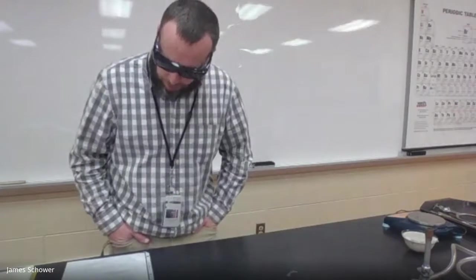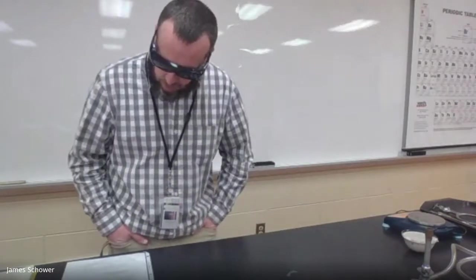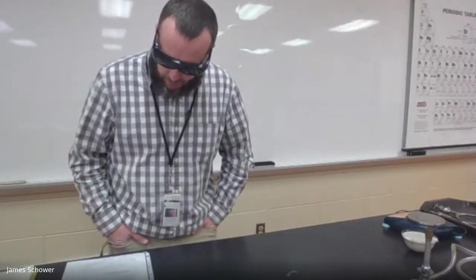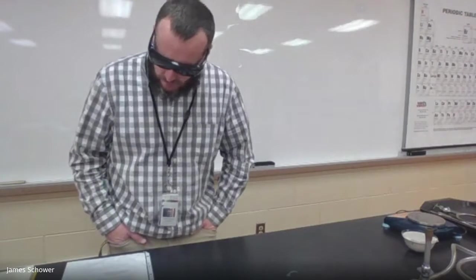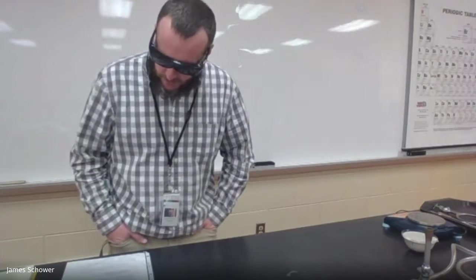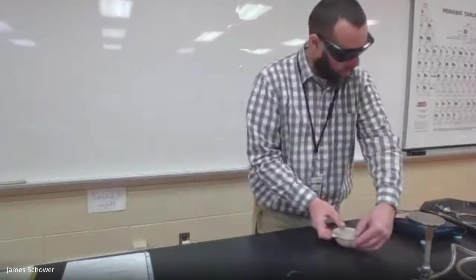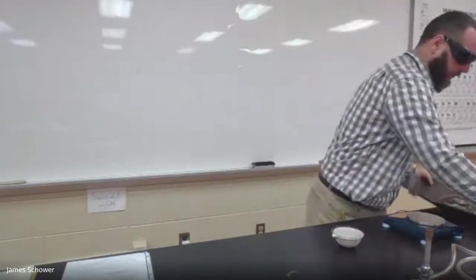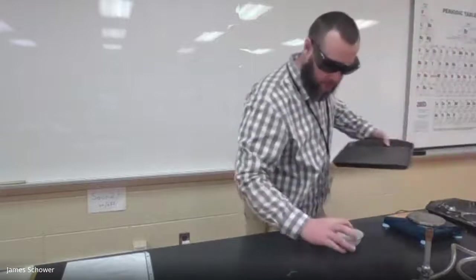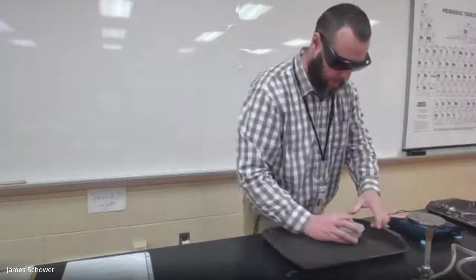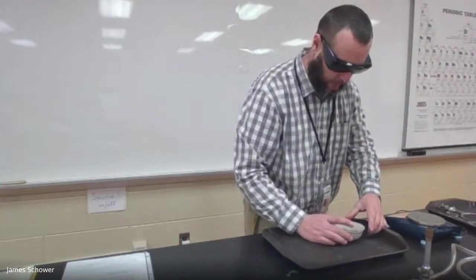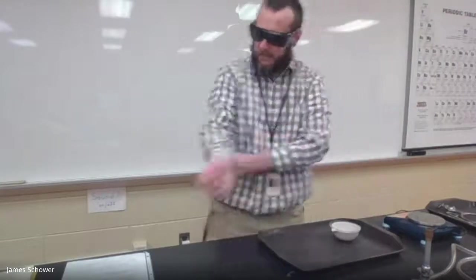Now, step three is cover the evaporating dish with the watch glass so that only the spout of the evaporating dish is exposed. So what I'm going to do is I'm going to put this under a tray like so to protect the table from any acid spills if there's any.